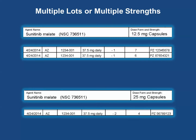If multiple lots were used in the same dispensing, record the quantity of each lot used on separate lines of the DARF. If multiple strengths were used in the same dispensing, record on each appropriate DARF. Note that the dose field is consistent between the two DARFs of different strengths.